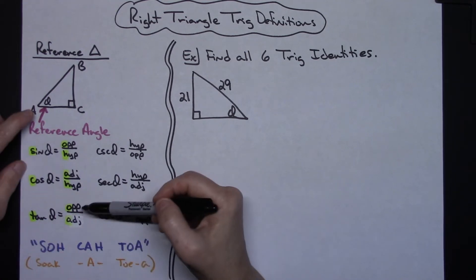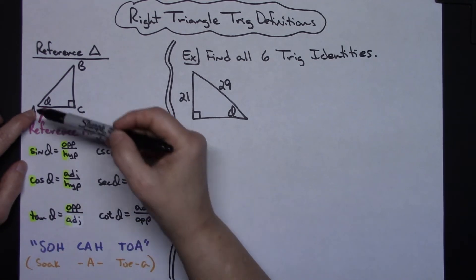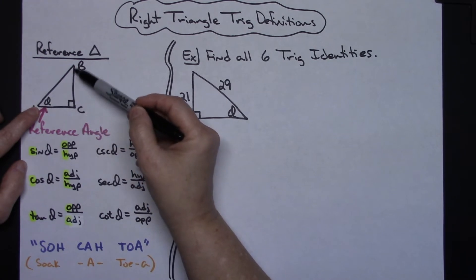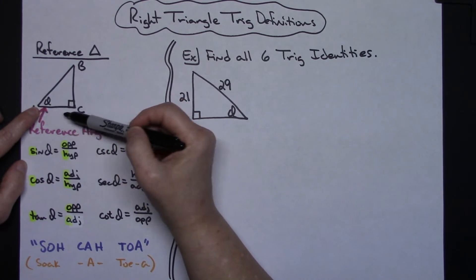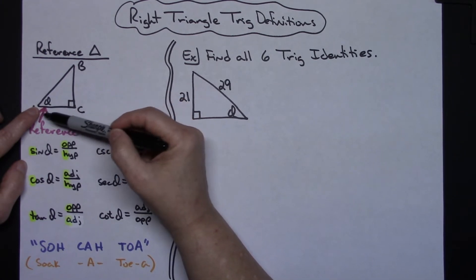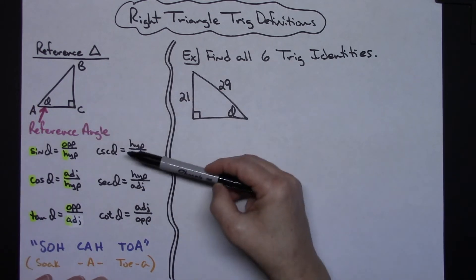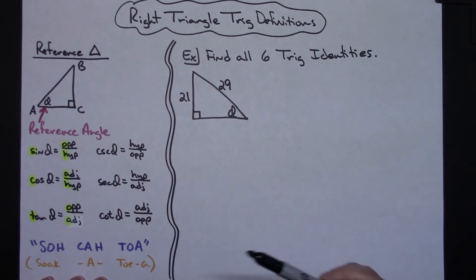The hypotenuse never changes because the hypotenuse is always across from the right angle in a right triangle. Then tangent is going to be the opposite side over the adjacent side, so the tangent of theta is this opposite side over the adjacent side. And then cosecant, secant, and cotangent are just the reciprocals of those three.